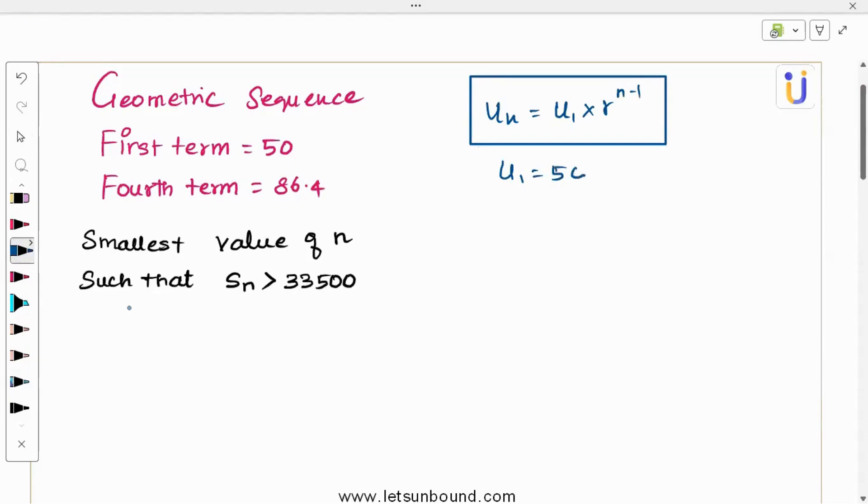First term u1 is 50. And u4 is 86.4. Now I can make some relation. u4 can be written as u1 r power 3 because n minus 1. We are finding u4 means r cube equals 86.4. So 50 r cube equals 86.4. And r cube is going to be 86.4 by 50. That simple. Now we can use n solve using GDC and we can find r.